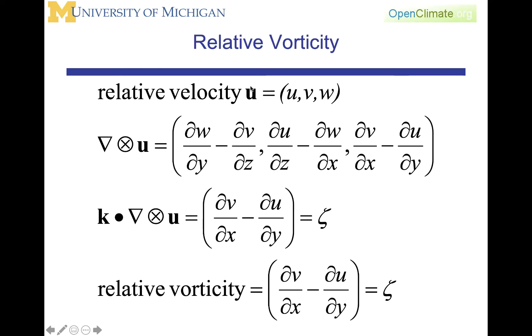Relative vorticity is related to the velocity relative to our coordinate system that we are observing on the surface, u v w. Hence, del cross u is defined as this vector here of dw dy minus dv dz, du dz minus dw dx, dv dx minus du dy. K dot the vertical component of that is often called zeta, and it is dv dx minus du dy. Here is a quantity that you should become very familiar with: dv dx minus du dy. This is the relative vorticity, zeta.